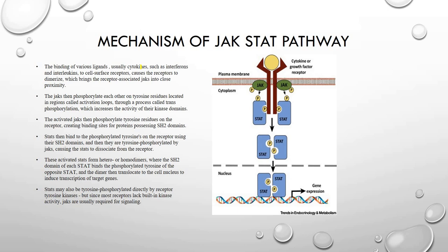On binding, the JAK gets activated and phosphorylates the tyrosine residues of the receptor. You can see the diagram and match what I am describing. The tyrosine residues of the receptor now bind with another free-moving protein, that is the STAT — signal transducer and activator of transcription. This is also phosphorylated by the JAK. Pairs of phosphorylated STATs dimerize and translocate to the nucleus to regulate gene transcription, resulting in a biological response.